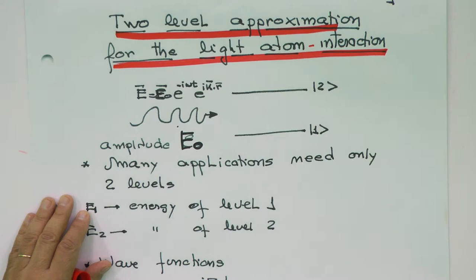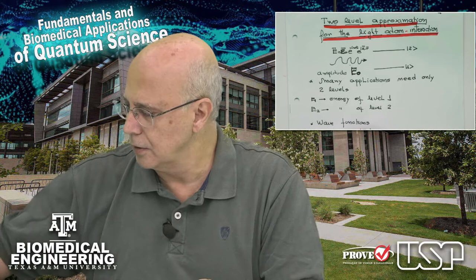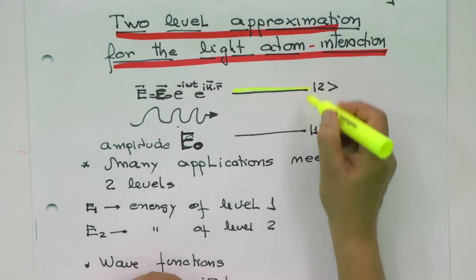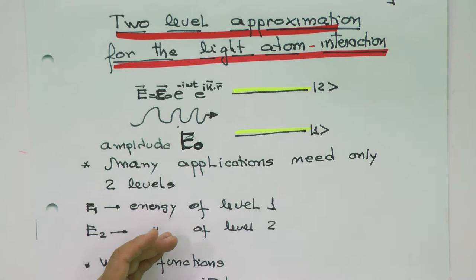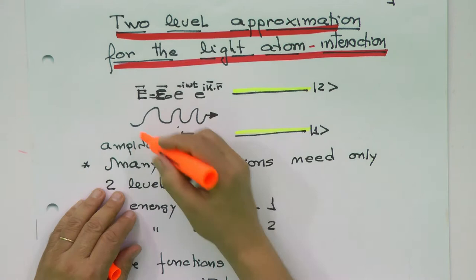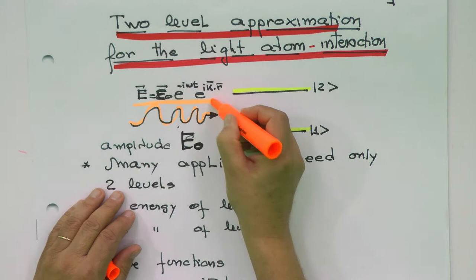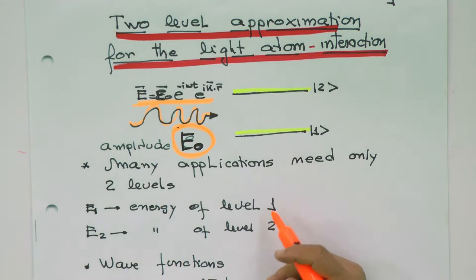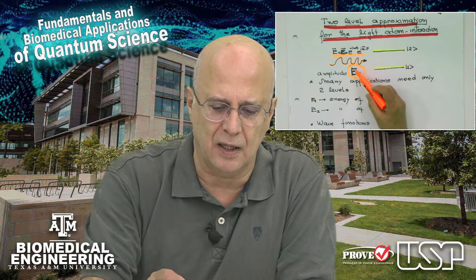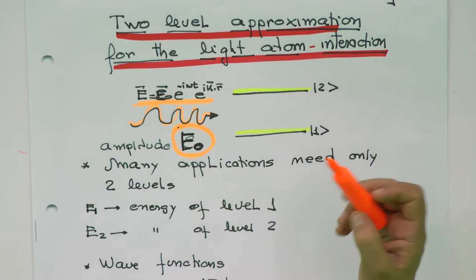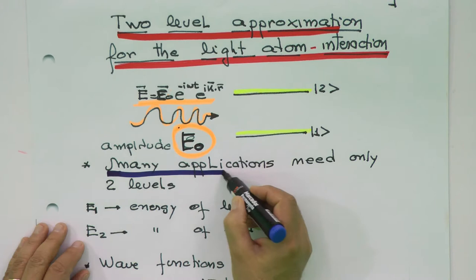We're going to consider the system as two important levels — the system may have many others, but we'll consider two. One we'll call level one and the other level two. The electromagnetic field we'll also consider monochromatic, meaning a single frequency, which has a spatial dependence and amplitude E-zero. We don't have enough letters to express everything — I was going to call the amplitude epsilon, but that would cause confusion with other concepts of epsilon later on.